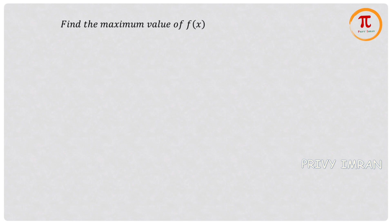Find the maximum value of f(x) = ∫₀² 1/(2 + |x - t|) dt, where the value of x lies between 0 and 2.